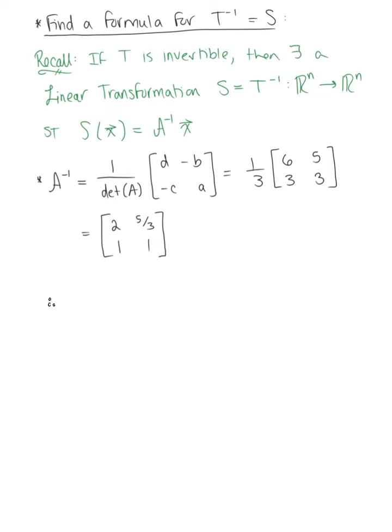So therefore, the formula for the inverse of our linear transformation is defined as the matrix [2, 5/3; 1, 1] multiplied by our vector x in R², x₁, x₂. And simplifying by the row column rule, we are left with 2x₁ + (5/3)x₂ in the first row, and in our second row, we have x₁ + x₂.